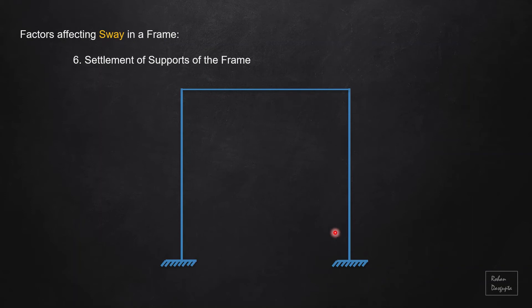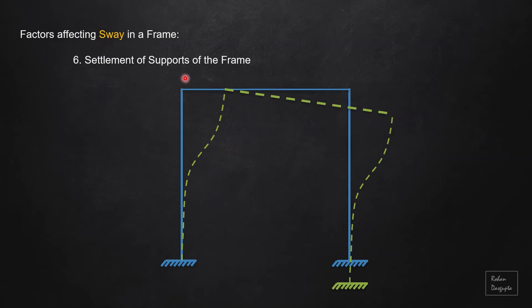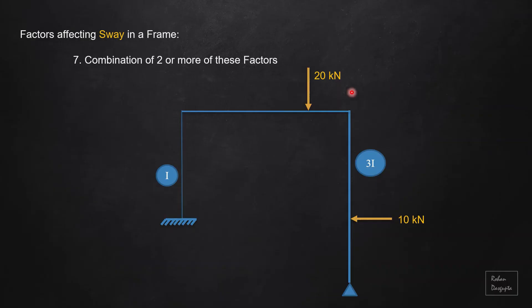Number six is settlement of supports. If one of the supports of the frame settles, the deflected shape will be like this — the rigid joints will both have a horizontal deflection, making this a sway frame.